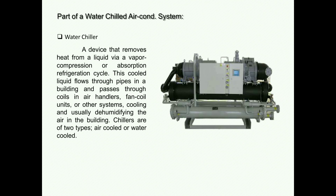A chiller is a device that removes heat from a liquid via a vapor compression or absorption refrigeration cycle. This cooled liquid flows through pipes in a building and passes through coils in air handlers, fan coil units, or other systems, cooling and usually dehumidifying the air in the building. Chillers are of two types: air cooled or water cooled.